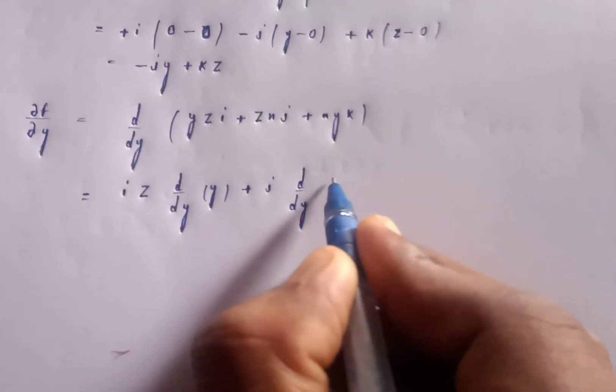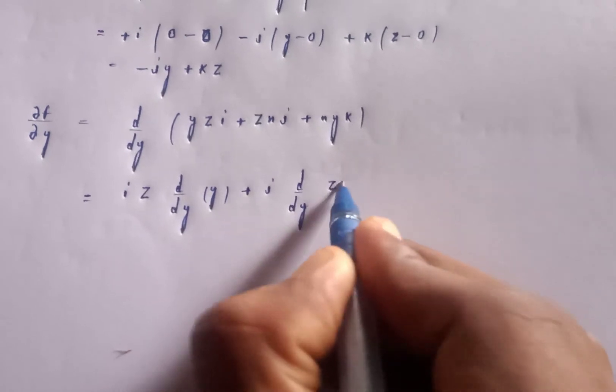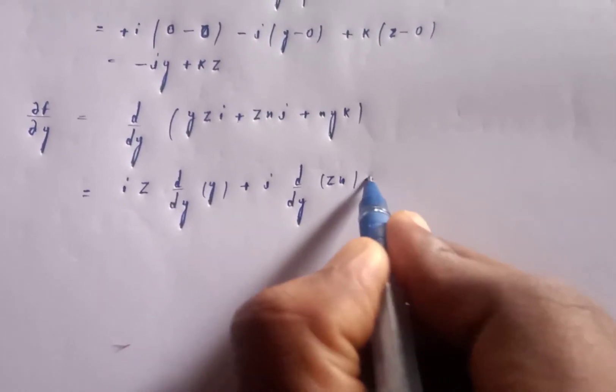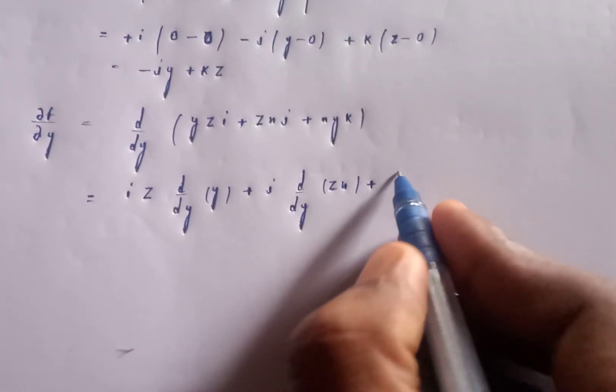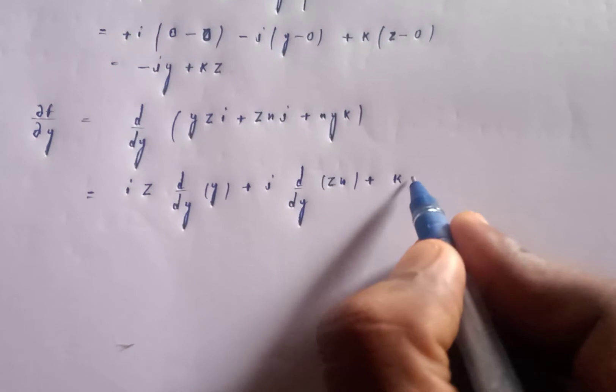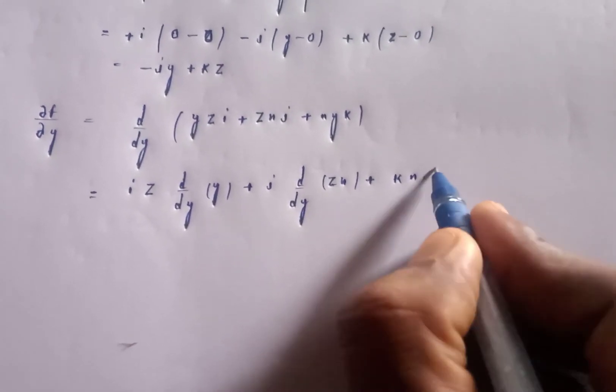For j, zx is constant with respect to y so d/dy of zx equals zero. For k, d/dy of xy equals x.